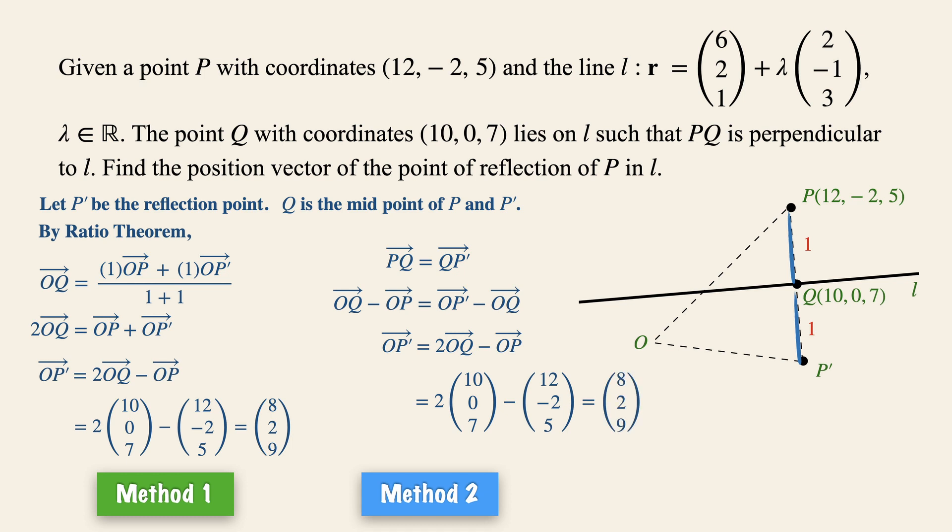And this is the coordinates of the reflection point. Now in summary, to find a reflection point in the line, you need two vital ingredients. Firstly, the coordinates of the original point before being reflected in the line, and the coordinates of the foot of the perpendicular from that point to the line.